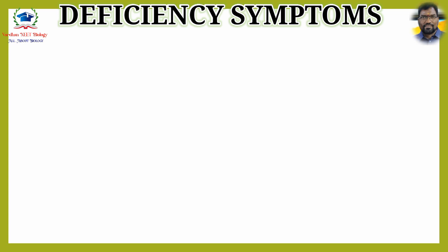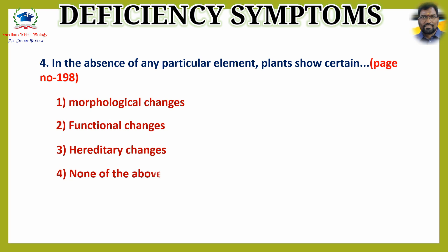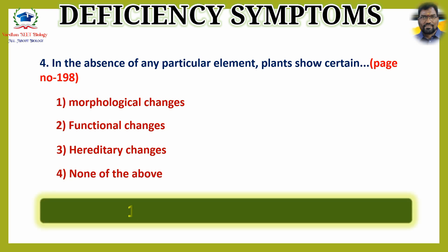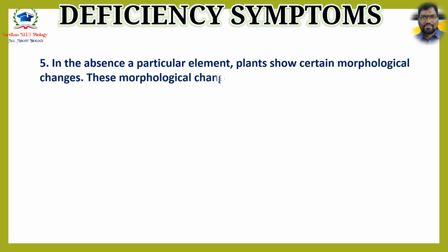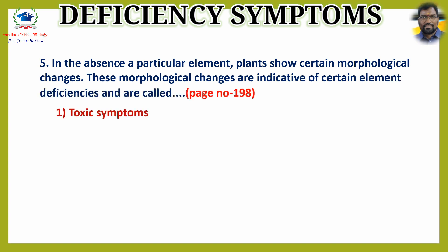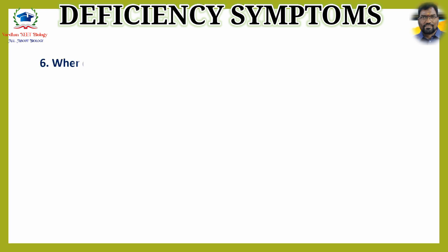Question 4: In the absence of any particular element, plants show certain — options are 1) morphological changes, 2) functional changes, 3) hereditary changes, 4) none of the above. The answer is option 1: morphological changes. Question 5: These morphological changes are indicative of certain element deficiencies and are called — the answer is option 2: deficiency symptoms.